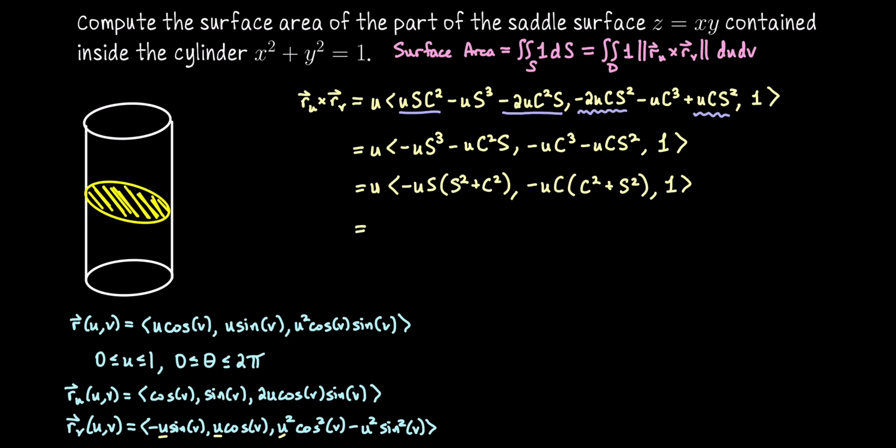Okay, so now let me write what I think is the nicest presentation of this cross product. And I will stop this shorthand for cosine and sine. I think it makes it easier to save room and a little harder to read. So our cross product is the scalar u times negative u sine of v, negative u cosine of v, 1. Where here I've used the fact that cosine squared plus sine squared equals 1 for both of those first two coordinates.